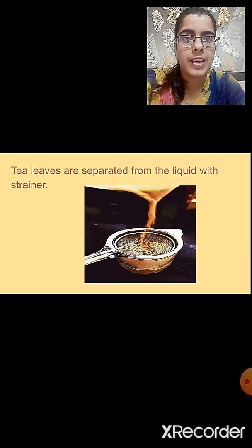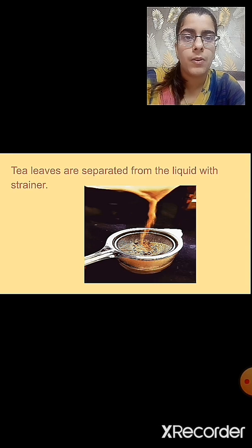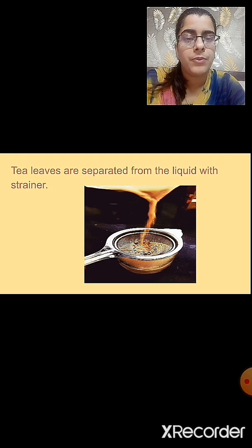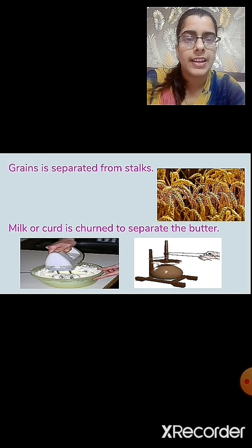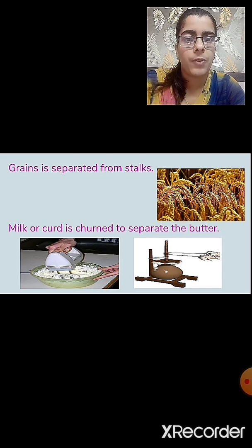Let's see the different examples we come across in our day-to-day life for separating substances. Tea leaves are separated from the liquid with a strainer. Tea is made using different components like milk, sugar, water, and tea leaves. When tea is prepared, we need to separate the tea leaves from the prepared tea by filtering it. Grains are separated from the stalk. And another example is milk or curd is churned to separate the butter — the churning process is done for the separation of butter from milk or curd.